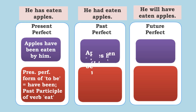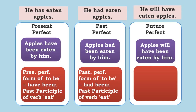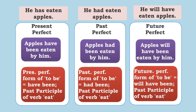For past perfect: always 'have' will be there, and when 'have' comes you cannot use 'be' — it has to be 'been.' The passive of 'He had eaten apples' is 'Apples had been eaten by him.' 'Had' is used because it is past perfect. For future perfect, 'He will have eaten apples' becomes 'Apples will have been eaten by him.' Future perfect form of 'to be' is 'will have been,' and the past participle remains 'eaten.' This is correct English and this is how all tenses are transformed from active to passive.